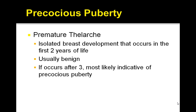For central precocious puberty, if the LH response is positive, then you obtain a cranial MRI to look for CNS tumors. In girls between 6 and 8 years of age with signs of precocious puberty, the incidence of CNS tumors is only 2%. If CNS tumors are ruled out, then constitutional precocious puberty is likely the etiology.